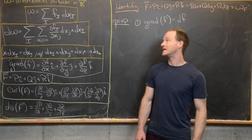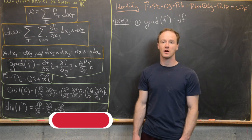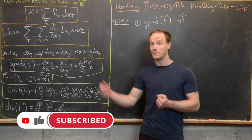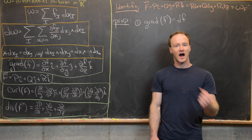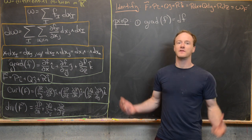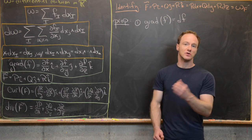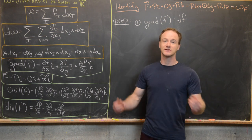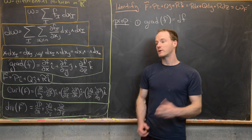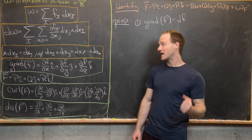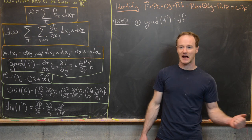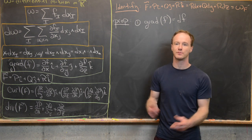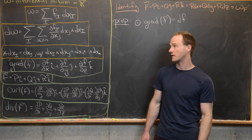In the last couple of videos, we've been looking at differential m-forms on ℝⁿ, the exterior derivative of an m-form which is an m+1 form, the Hodge operator on the space of m-forms which goes to the space of n minus m forms. Before we move on to more general types of things like this, we want to take a step back and see how this links with classical vector calculus that you probably saw in a multivariable calculus class.